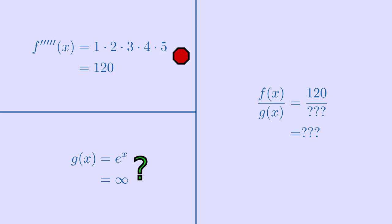However, the exponential function is indestructible. Its derivative is always equal to itself. Once the polynomial is ground down, the exponential will still go to infinity. And then you'll have a finite number divided by infinity. And like we've seen before, any finite number divided by infinity is zero.